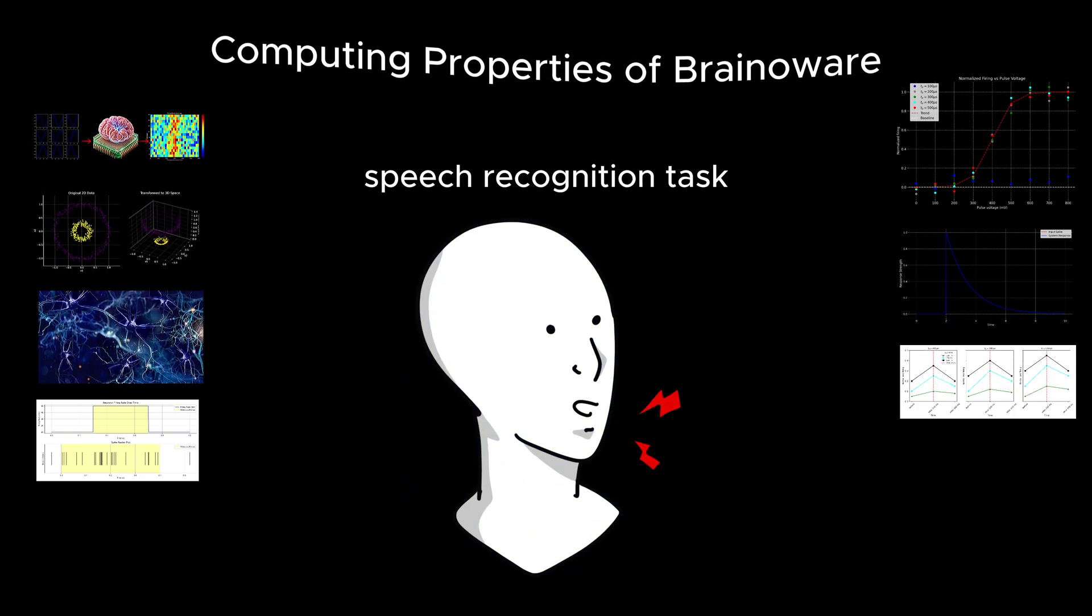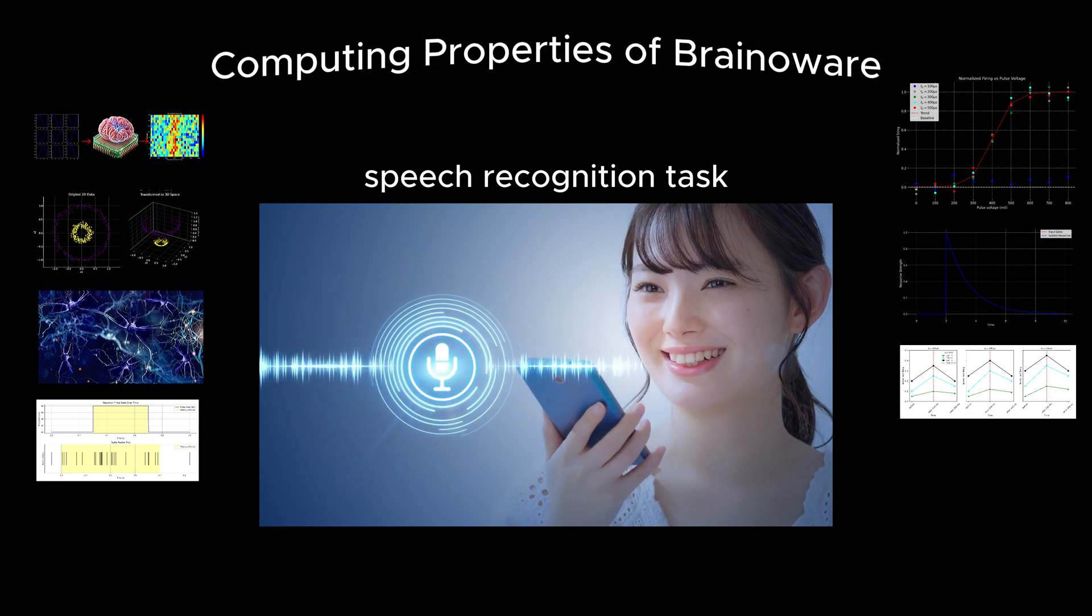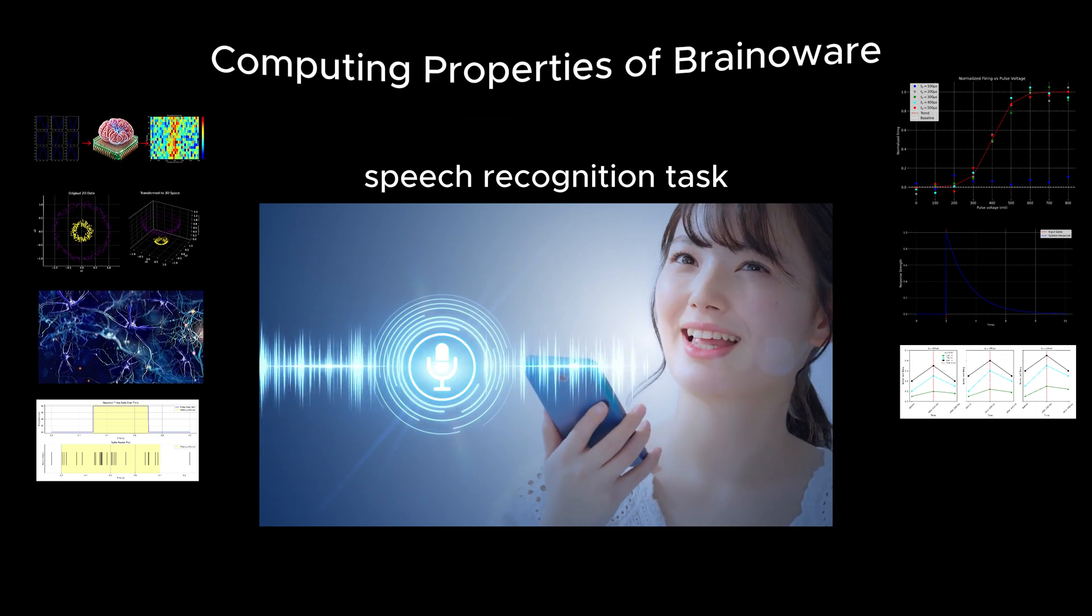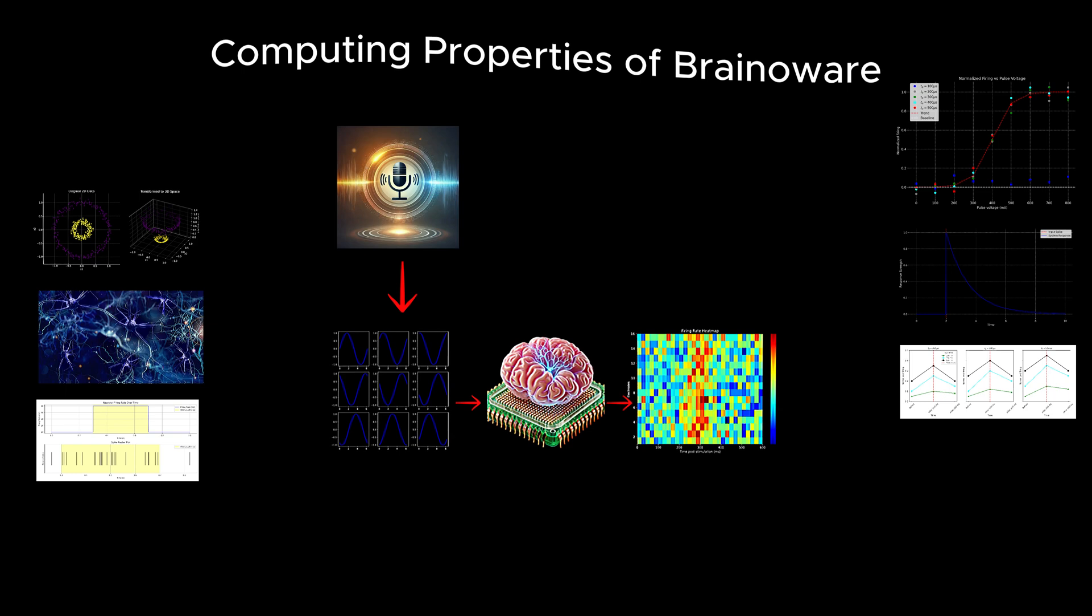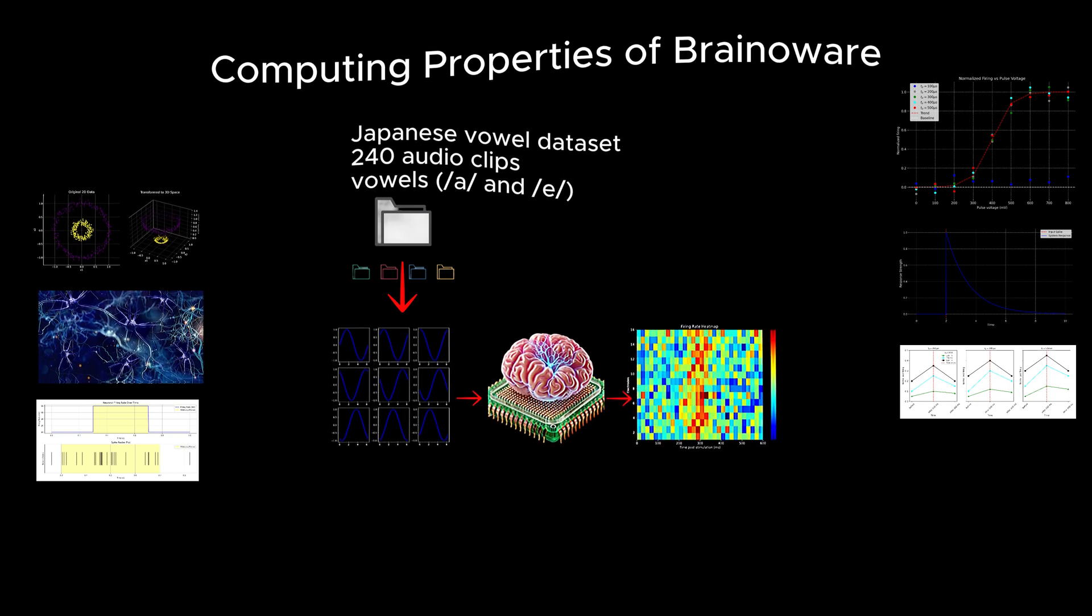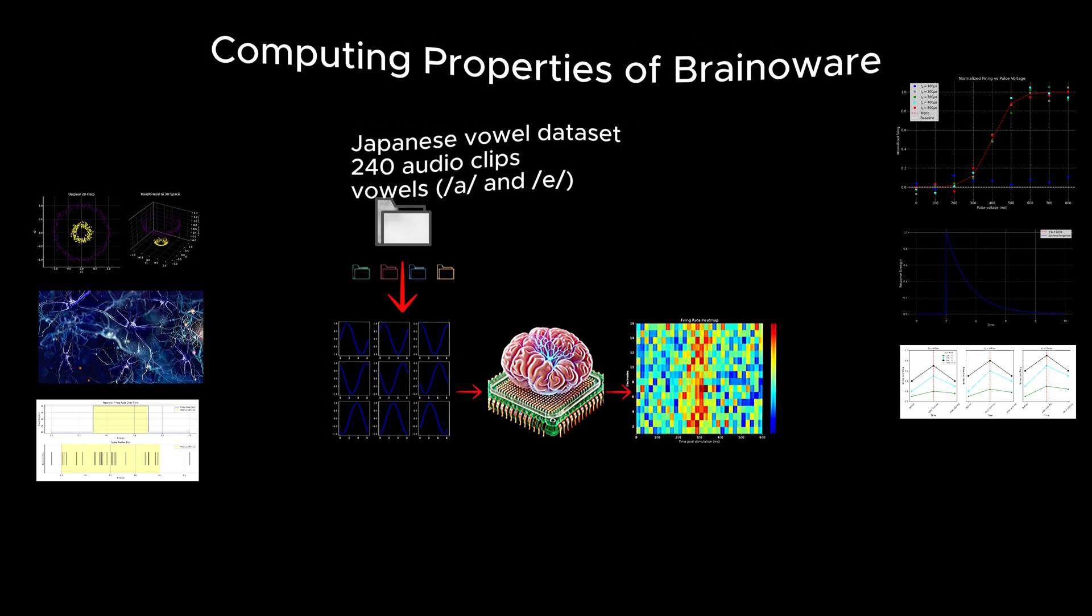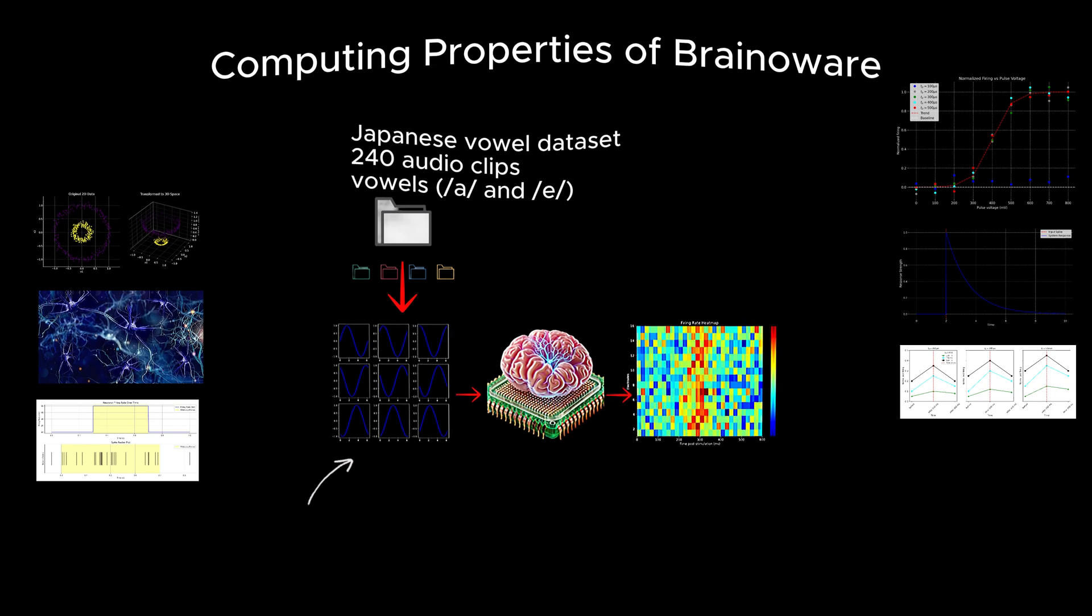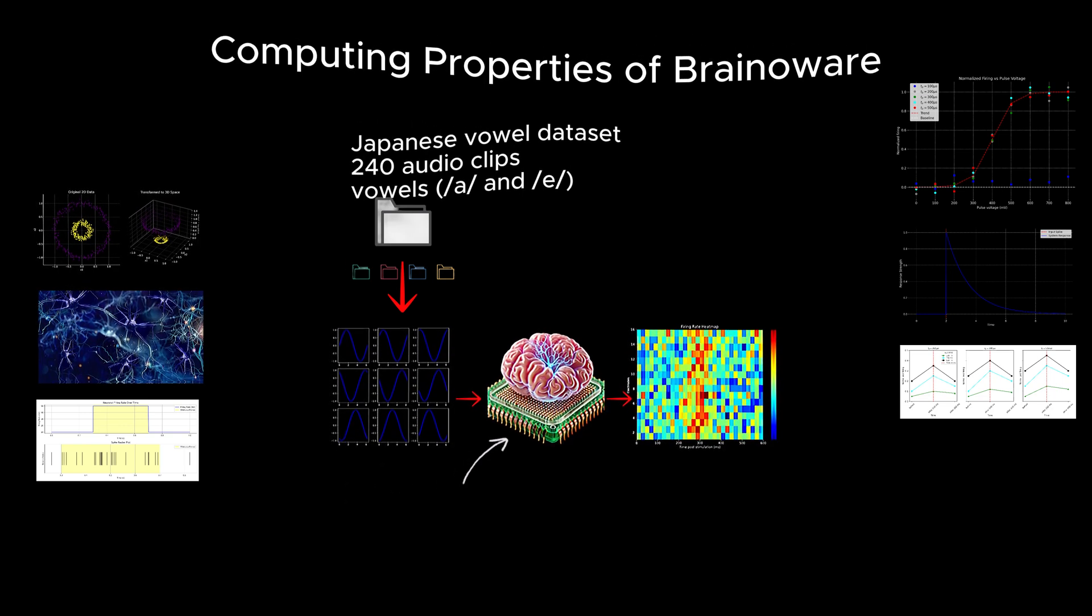Next, researchers focused on the speech recognition task as one of the common applications of existing AI. Speech recognition involves identifying spoken words or sounds and translating them into a machine-readable format, often used in technologies like virtual assistants and transcription tools. The researchers implemented this task to evaluate BrainAware's ability to process temporal patterns in audio data. The researchers used a benchmark Japanese vowel dataset consisting of 240 audio clips of isolated vowels, /a/ and /e/, pronounced by eight different male speakers. Each audio clip was converted into spatiotemporal sequences of electrical stimulation pulses, which represent variations in time and space. These electrical stimulations were applied to the brain organoids through the multi-electrode array, MEA.